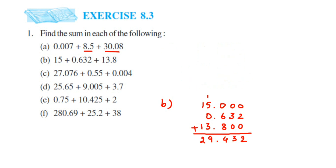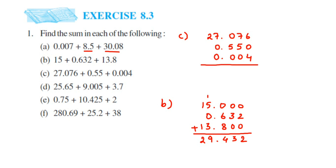Same thing — just line up with the decimal point and then add it up. We have 27.076. The next number is 0.55, so line up with the decimal: 0 here, 5 and 5 here, put 0 in the remaining spaces. The next is 0.004 — decimal point here, then 0, 0, 4. Now add it up: 6 plus 4 is 10, so 0 and carry 1; 7 plus 5 is 12, plus 1 carry is 13; 5 plus 1 is 6; decimal point; then 7 and 2. So the answer is 27.630.